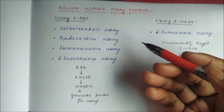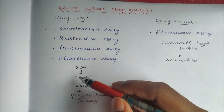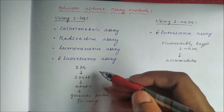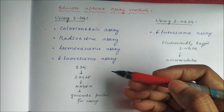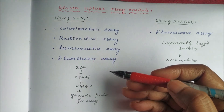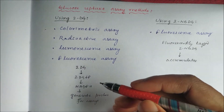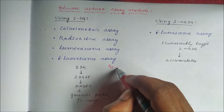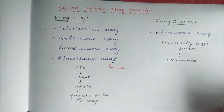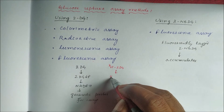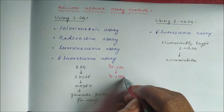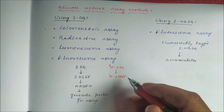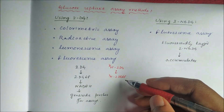In the colorimetric assay, plain 2-deoxyglucose is used. For the fluorescence assay, fluorescently tagged 2-deoxyglucose is used. For luminescence, luminescently tagged 2-deoxyglucose can be used. In the radioactive assay, a radioisotope-tagged form is used — specifically tritium-labeled 2-DG (H3-2DG). This is converted to H3-2-deoxyglucose-6-phosphate, which can be measured by scintillation counter.